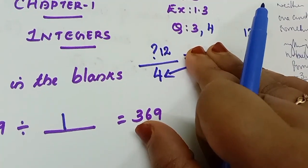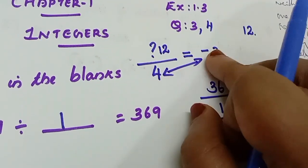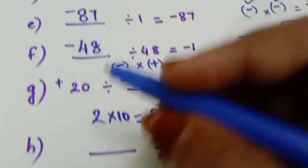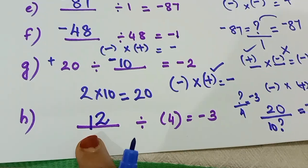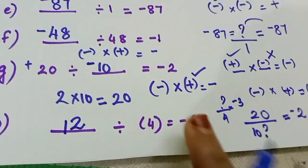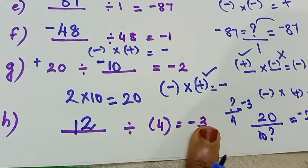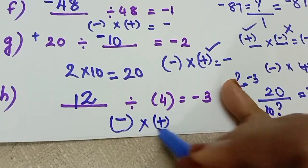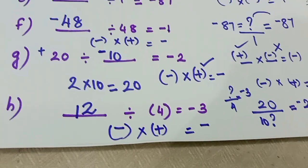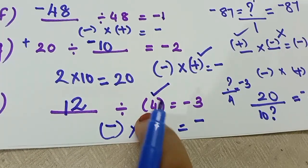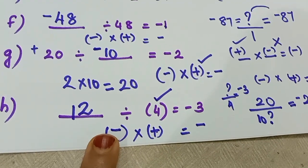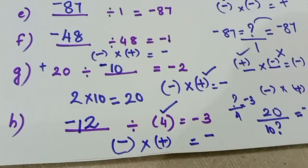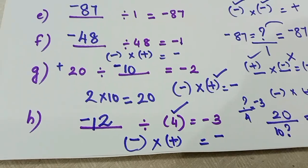12 divided by 4, we get 3. Then we get 12. 12 divided by 4, we get 3. Here we have minus 3, we get minus sign. We get minus into minus into plus, we have minus. And we have minus, and already in the question we have minus, then we have to answer.